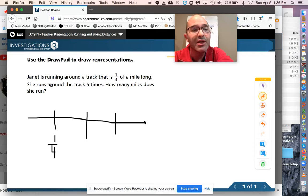Here it says Janet is running around a track that is one-fourth of a mile long. She runs around the track five times. How many miles does she run?